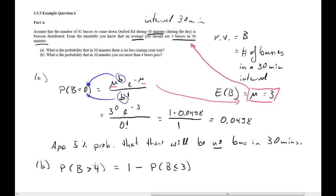Why? Because there are only two options: either we get more than 4, or we get 4 or fewer. Any outcome falls into one of these two categories. More than 4 does not include 4, so the complement is getting 4 or fewer buses.